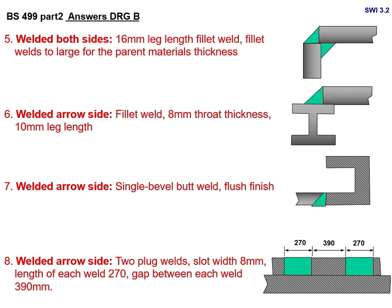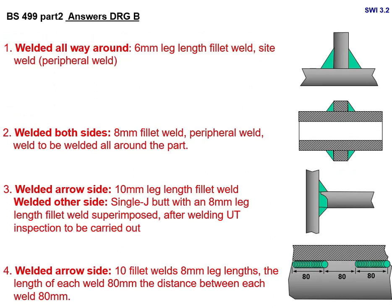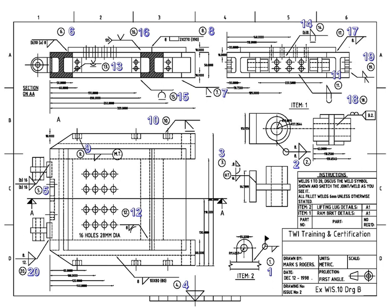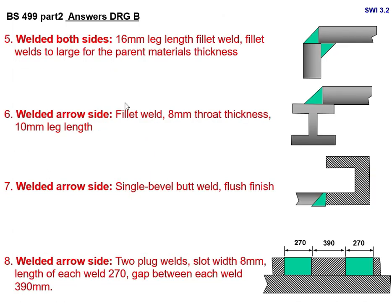For joint number 5, you see '16' and 'B' on the symbol. This is welded both sides, 16 mm leg length fillet weld. However, note that this leg length is too large for the parent material thickness — that is an error you should comment on.